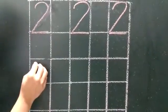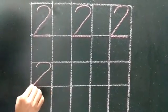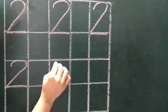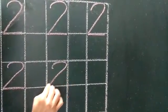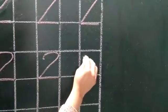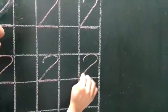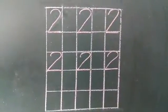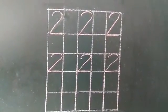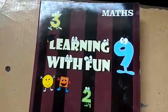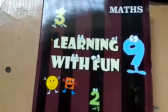Chalo bachyo — let's go, children. Anti-curve, then you have to put a sleeping line. What is it? 2. Then sleeping line. What is it? 2. Then sleeping line — 2. Learning with fun!